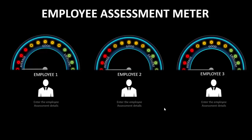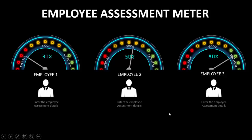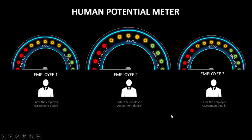If I click this one it will give me the rating of three employees. The first employee got 30% which is average, the second employee got 50% which is good, and the excellent employee with 80% score is the clear winner.